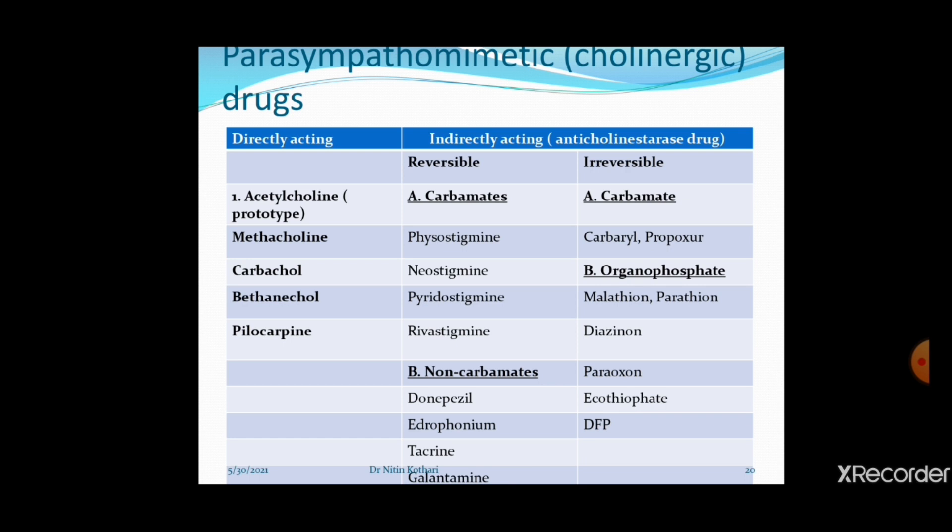Broadly, carbamates are reversible in nature and organophosphates are irreversible, although a few carbamates like carbaryl and propoxur are exceptions. Organophosphates are used as insecticides in agriculture, so organophosphate poisoning is very common among farmers in the Indian setting. Carbamates, on the other hand, are more commonly used therapeutically as medicines.